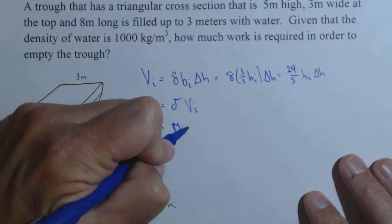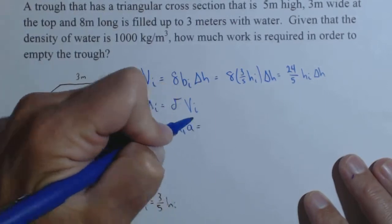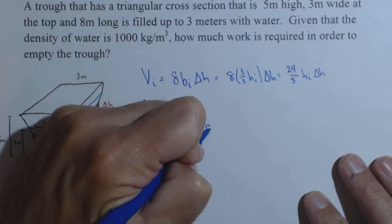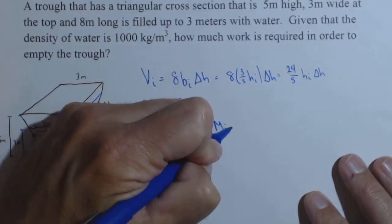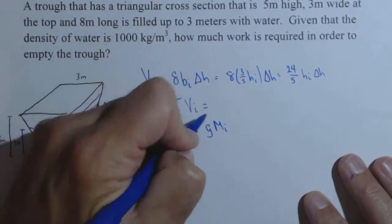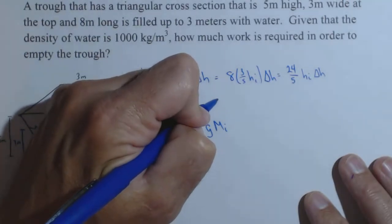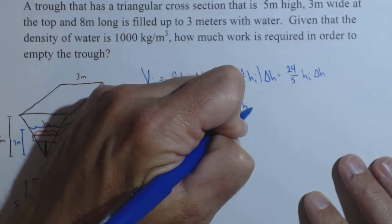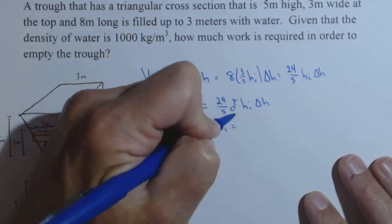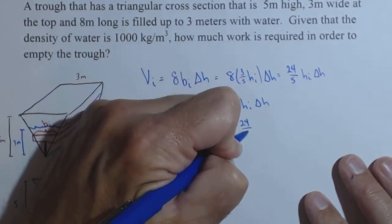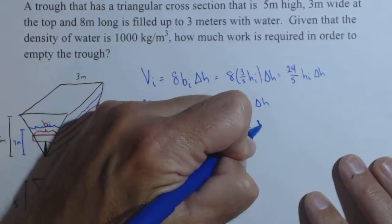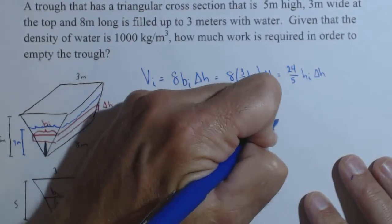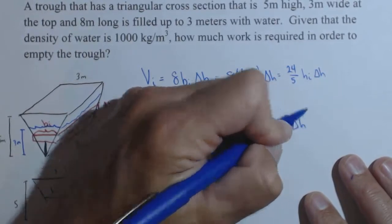And then the force of the i-th slice is just acceleration times our mass, so the mass of the i-th slice times our acceleration. Well, our acceleration is the acceleration due to gravity. So it's g times the mass of the i-th slice. Right here if we put in a delta, we'll have 24 fifths delta H sub i delta H. And here we'll have 24 fifths delta g H sub i delta H.